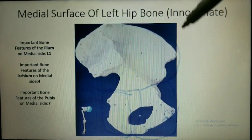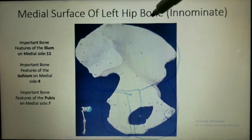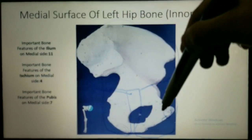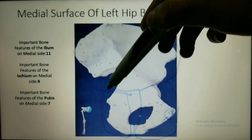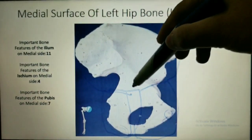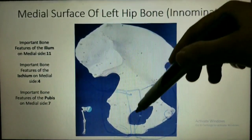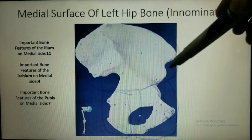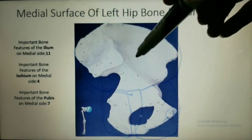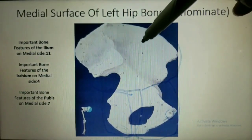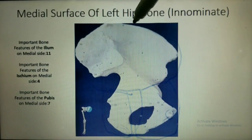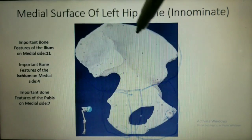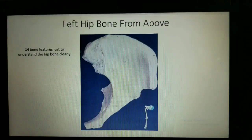In total for the medial surface, there are 11 features for the ilium, four bone features for the ischium, and about seven bone features for the pubis. I have not repeated many of the bone features since we already studied them on the lateral surface.